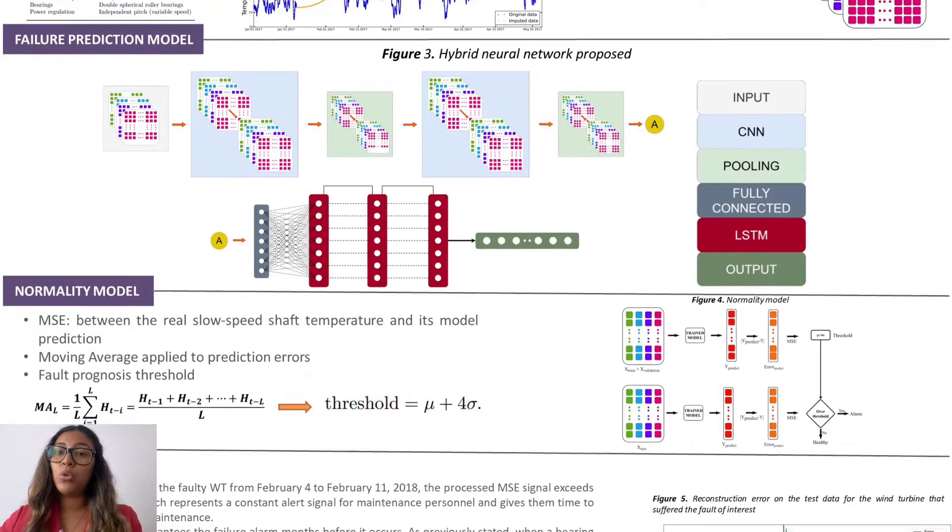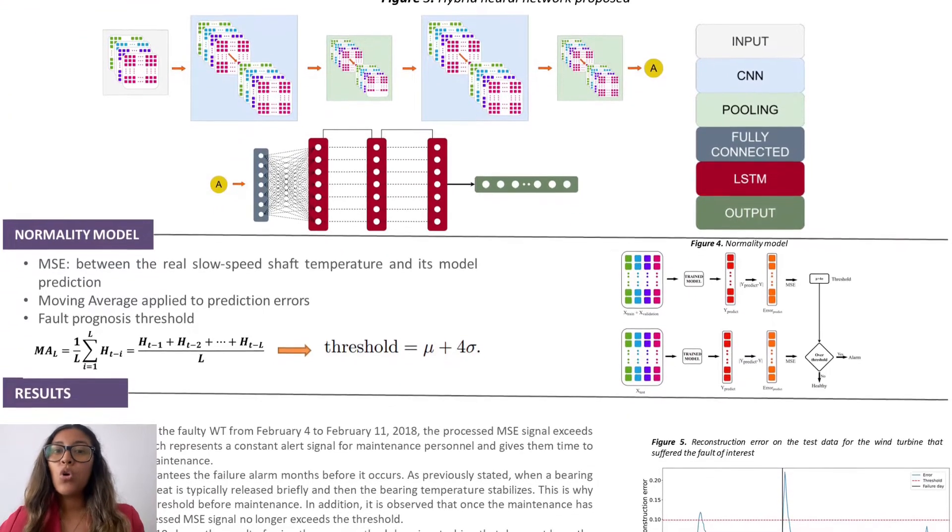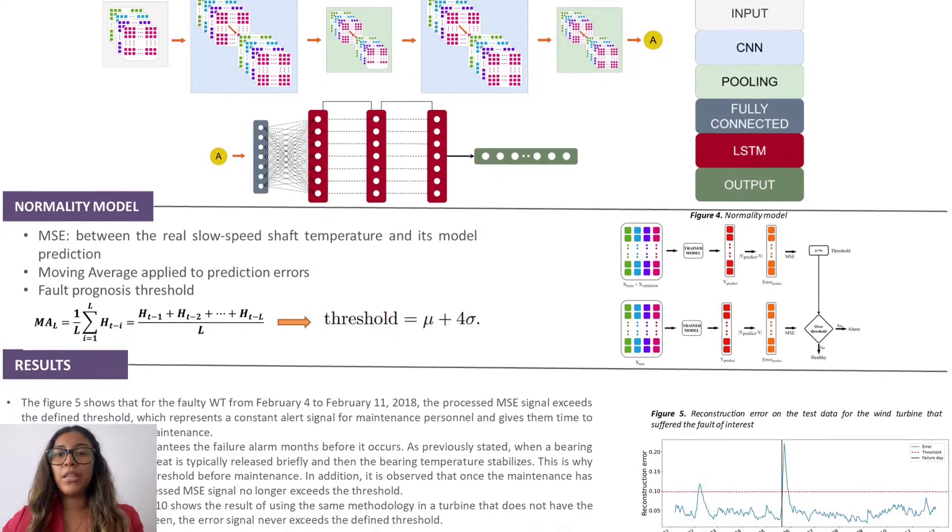Additionally, a normality model is used, which means that we just need one class to train our network. We don't have to wait until a turbine fails to predict a new failure.